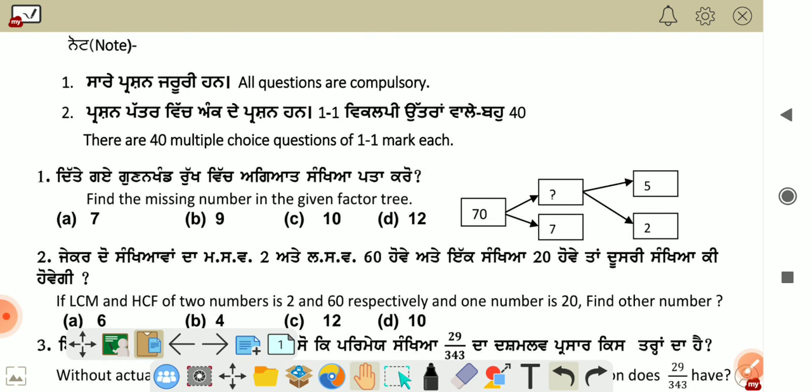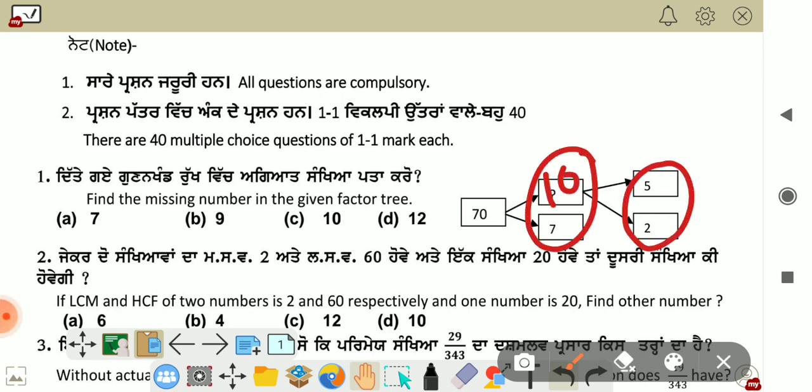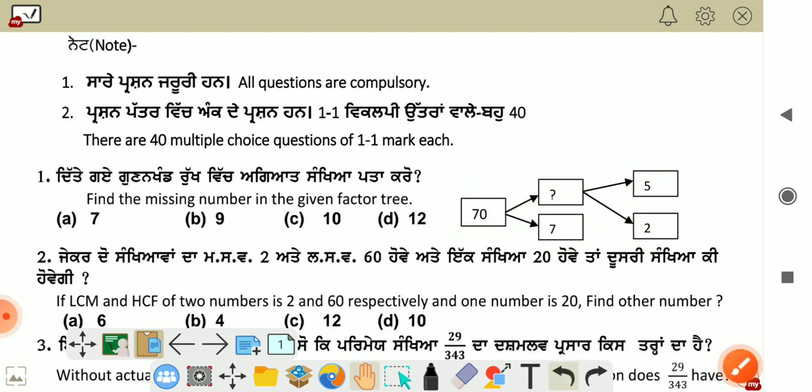First question is, find the missing number in the given factor tree. See, this has 5 into 2, what's the factor? 10. Then 10 into 7, what's the factor? 70. So the missing number is 10. So our answer is C.